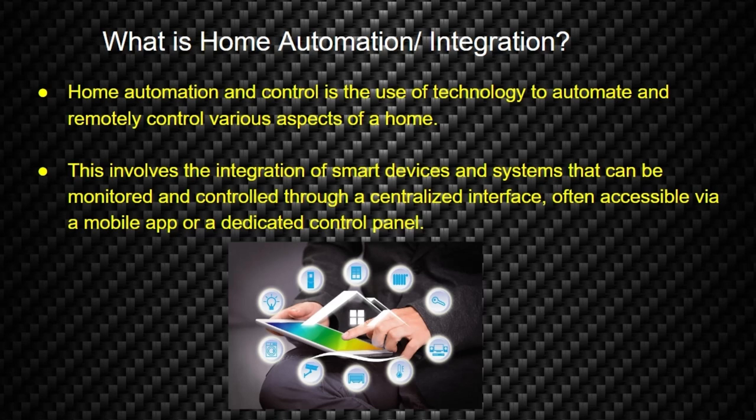First off, some of you may be asking, what is home automation or integration? Simply put, home automation and control is the use of technology to automate and remotely control various aspects of a home. This involves the integration of smart devices and systems that can be monitored and controlled through a centralized interface, often accessible via a mobile app or a dedicated control panel.